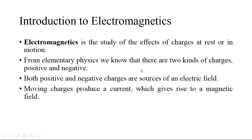From elementary physics, we know that there are two kinds of charges. A charge is the fundamental property of matter, just like mass. But unlike mass, charge comes in two flavors — it may be positive or negative. Both positive and negative charges are sources of an electric field. Similarly, moving charges produce a current which gives rise to a magnetic field. We can also define Electromagnetics as the study of interaction of fields generated by charge distributions and currents.